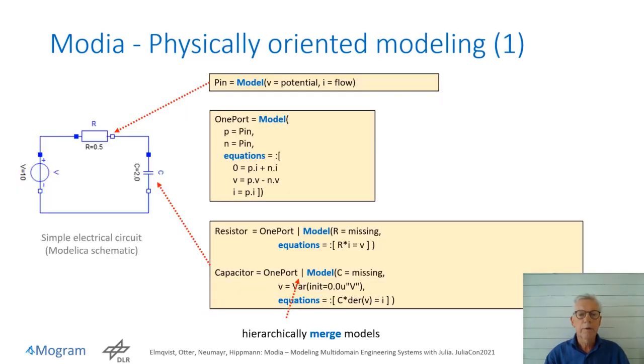Physically oriented modeling means connecting component instances, such as a resistor, a capacitor and a voltage source, and setting parameters. Connections can be acausal. An electrical wire is characterized by a voltage potential V and a flow variable, the current I. This defines a pin.